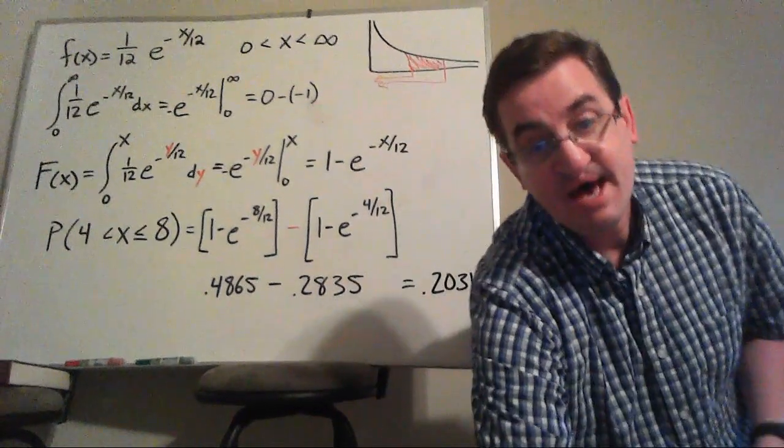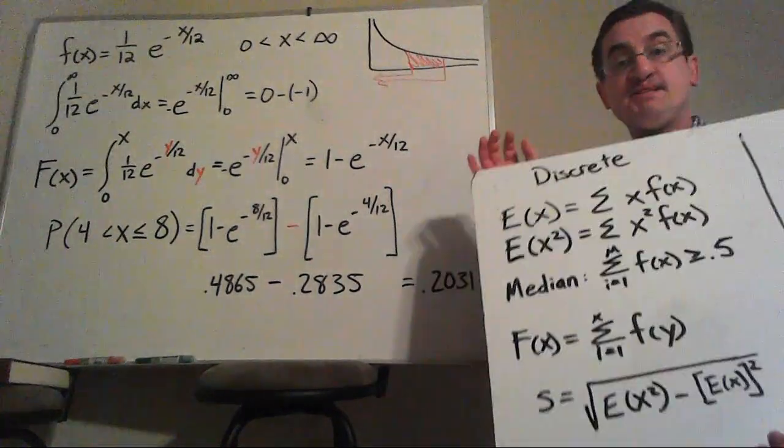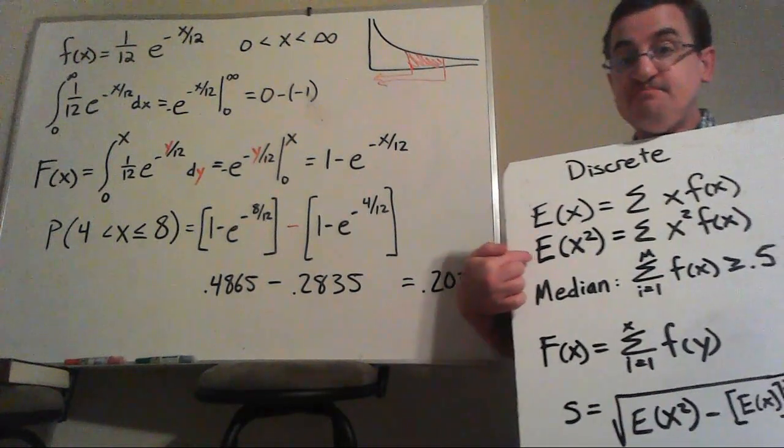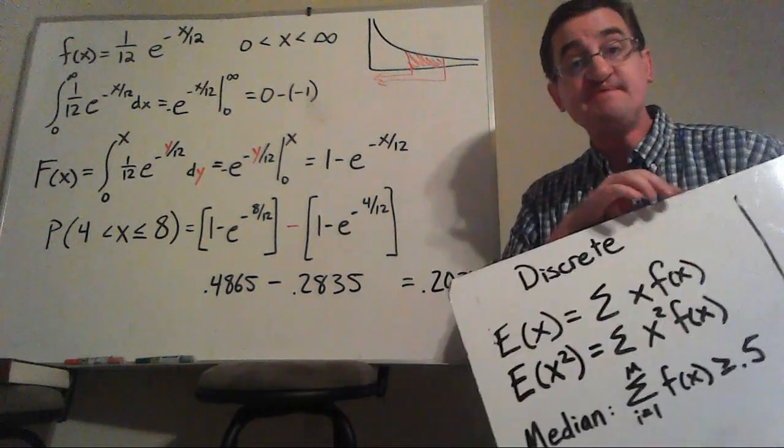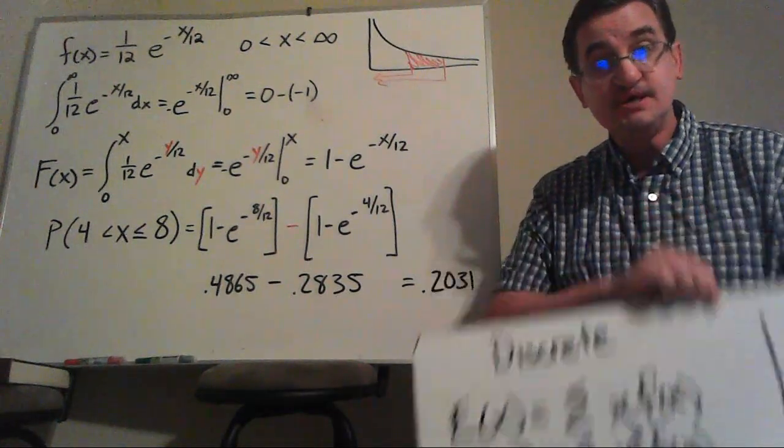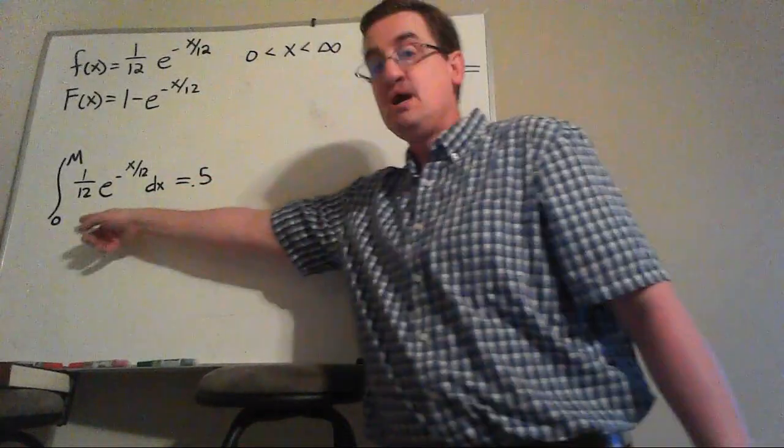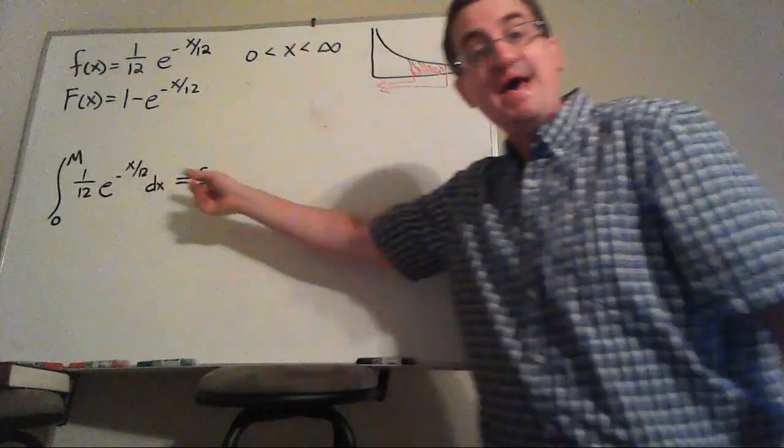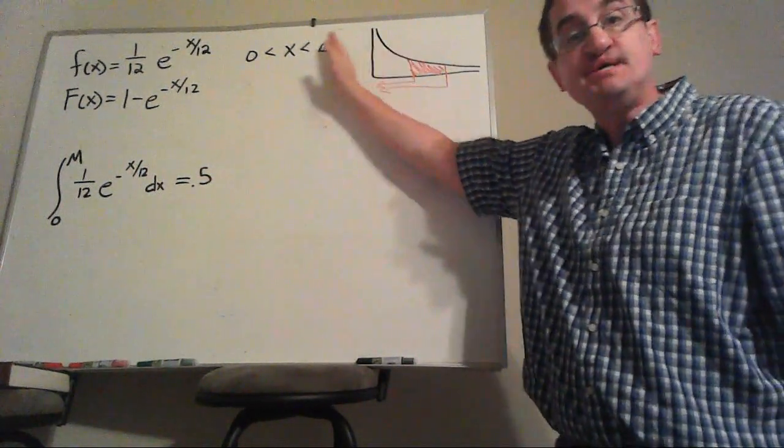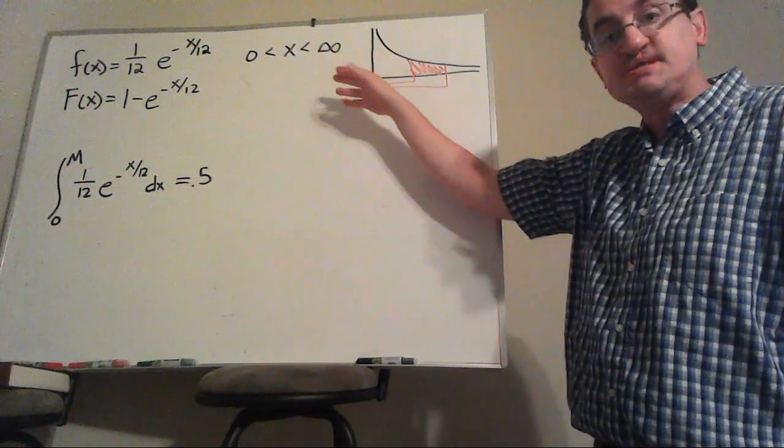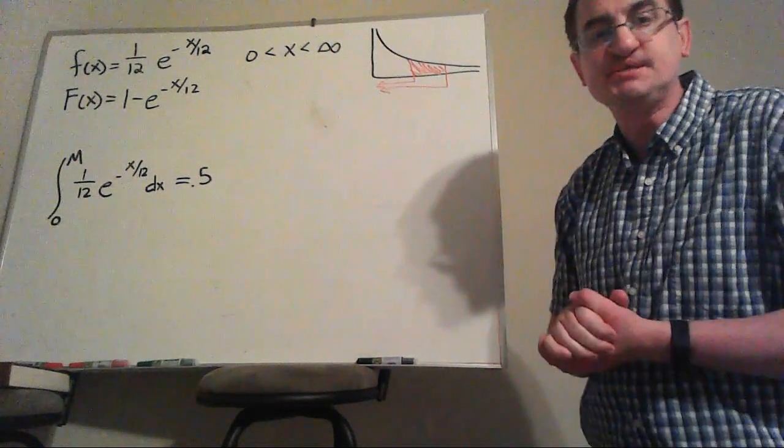Now, one thing we haven't talked about yet is what about the median. Before we counted up these probabilities until we got to 50%. Same idea here, but instead of counting up discrete probabilities, we're going to integrate up to the median and have that be 50%. In other words, where's the line that 50% of the area was to one side of it, which also means 50% to the other side.